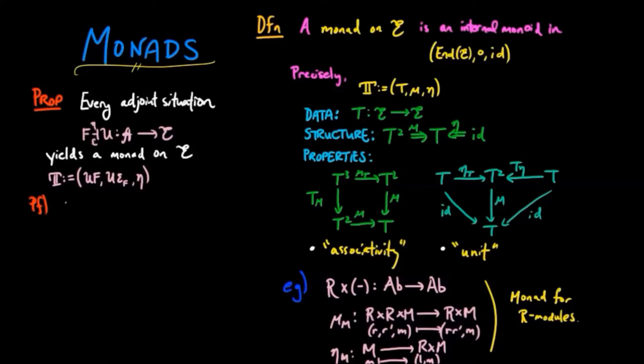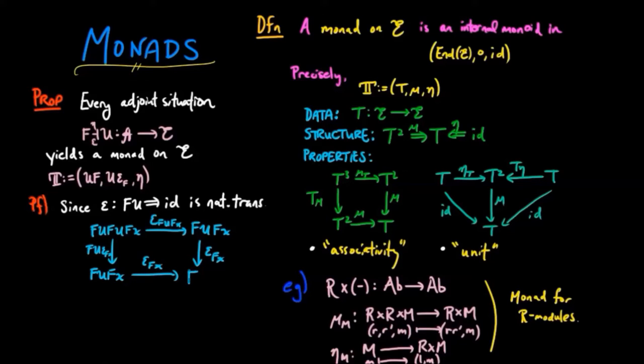Since the co-unit, epsilon, is a natural transformation from Fu to the identity, we can take some object X in E, apply F to it, and then look at the co-unit on the component FX. And the co-unit is an arrow in A. And so we have this naturality square, which takes Fu epsilon FX to epsilon FX. Then since this square commutes,